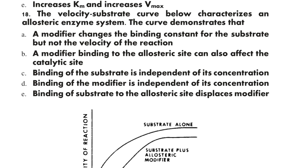Question 18: The velocity-substrate curve characterizing an allosteric enzyme system demonstrates that: A) a modifier changes the binding constant for the substrate but not the velocity of the reaction, B) a modifier binding to the allosteric site can also affect the catalytic site, C) binding of the substrate is independent of its concentration, D) binding of the modifier is independent of its concentration, E) binding of substrate to the allosteric site is less affected by the modifier. The correct option is B.